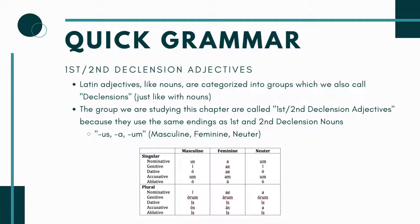The first group of adjectives we're studying are called first and second declension adjectives. The reason for that name is they use the exact same endings as first and second declension nouns — the us, a, um endings. Us is masculine, a is feminine, and um is neuter. You can see in the chart that it's matching exactly what we know from our noun ending chart, which is why adjectives we've seen have often been using the same ending as the noun they go with, like Puella Romana.